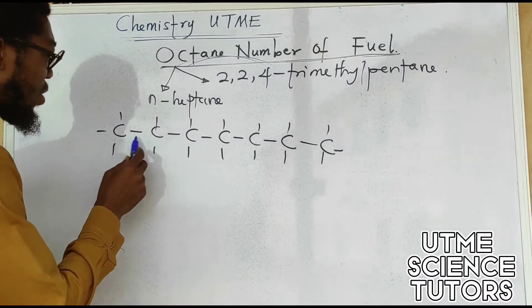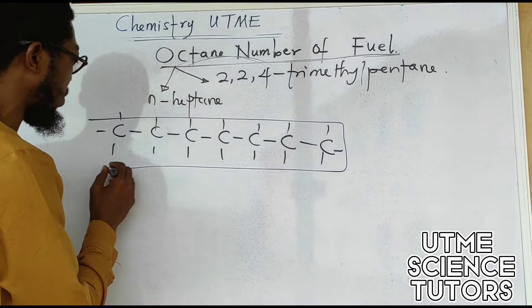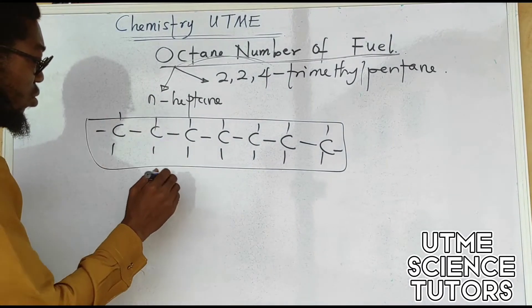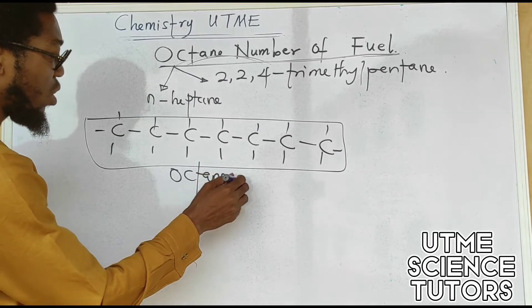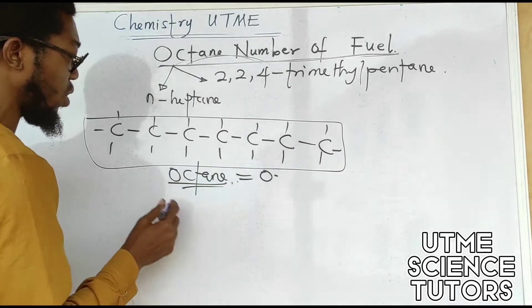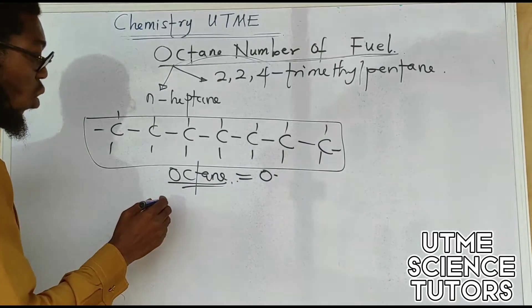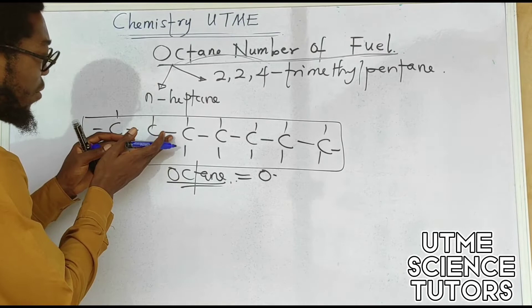This particular type of petrol that has all its components containing this molecule is having what we call octane number of zero. So it's a very bad petrol; the octane number equals zero is a poor petrol and it will cause knocking in our engine. That means the fuel that we have here is a very poor fuel.